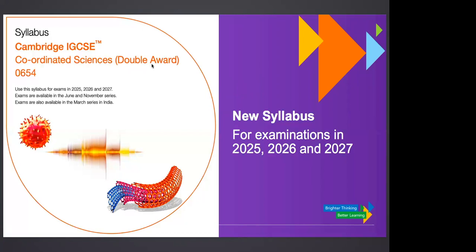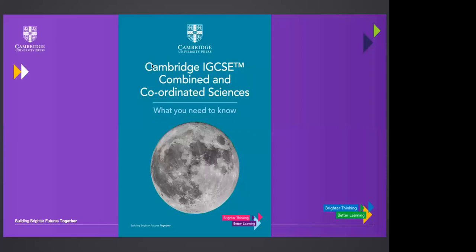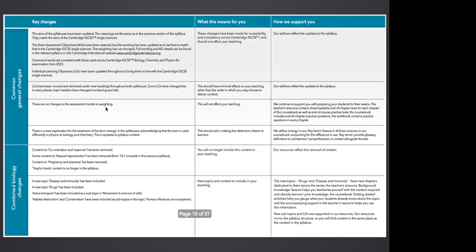Let's have a think about how we can use the upcoming resources to better teach the new syllabus. Like I said, the new resources from Cambridge are distinguishable in that they have a big moon on the front — space science is now part of the combined and coordinated science courses, which wasn't there before. What you'll find online now on the Cambridge University Press website is a document that shows you a nice distilled version of some of the edits that have been made to the new syllabus.